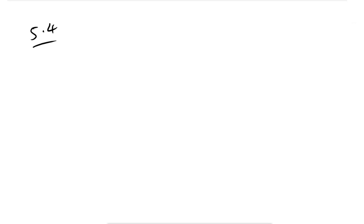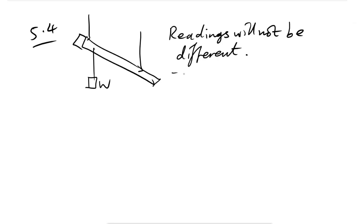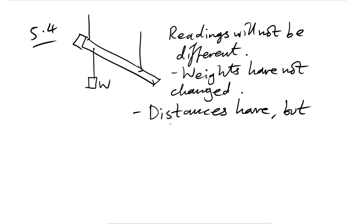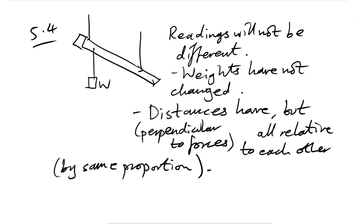Question 5.4: A second student suspends the same mass at the same position but tilts the supports so A and B are vertical, making the ruler non-horizontal. The scale readings will not be different. The weights haven't changed, and although the perpendicular distances have changed, they change by the same proportion relative to each other, so the moments still balance the same way.